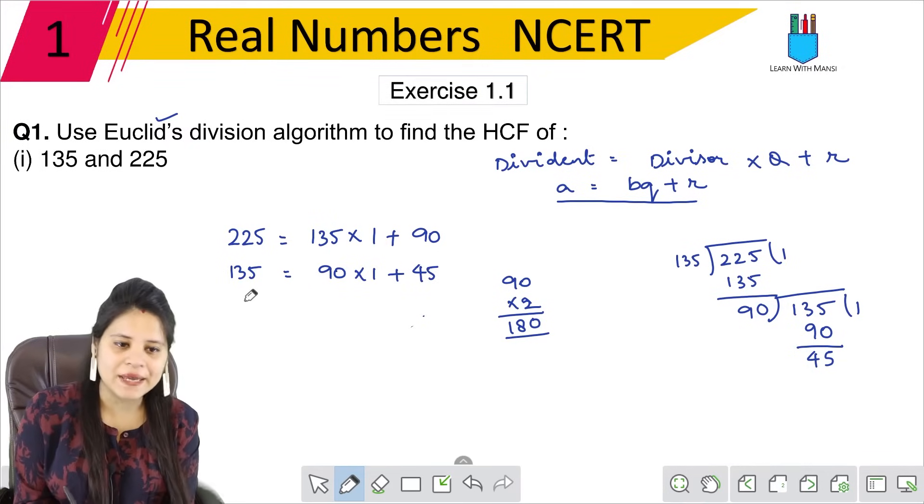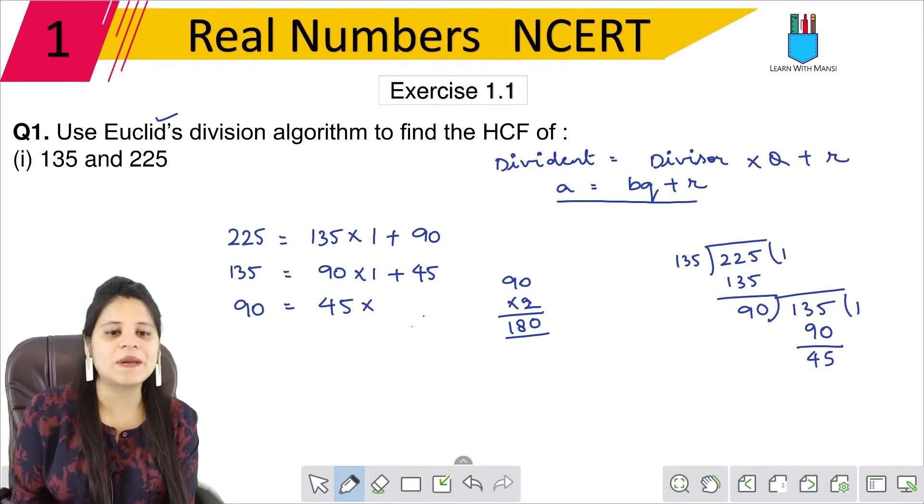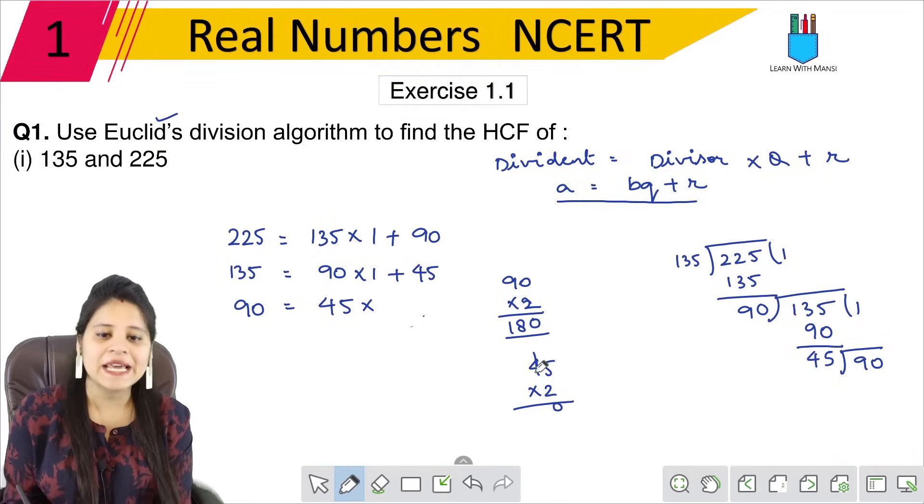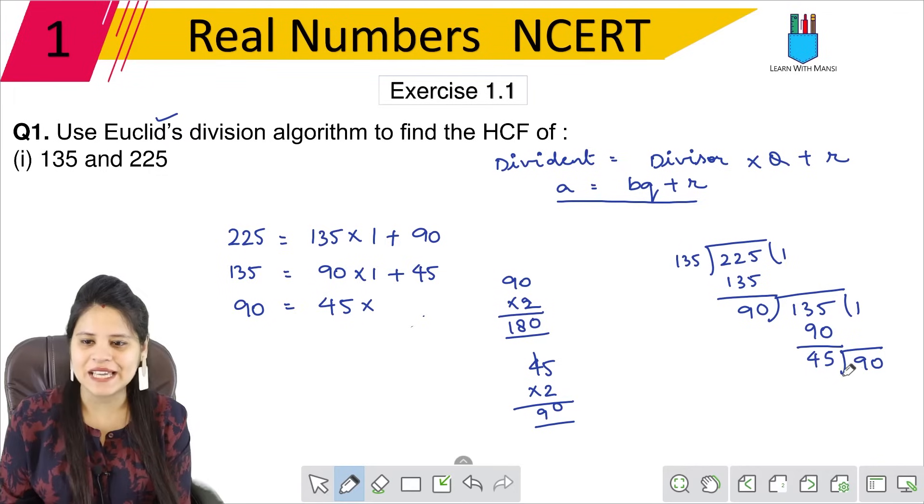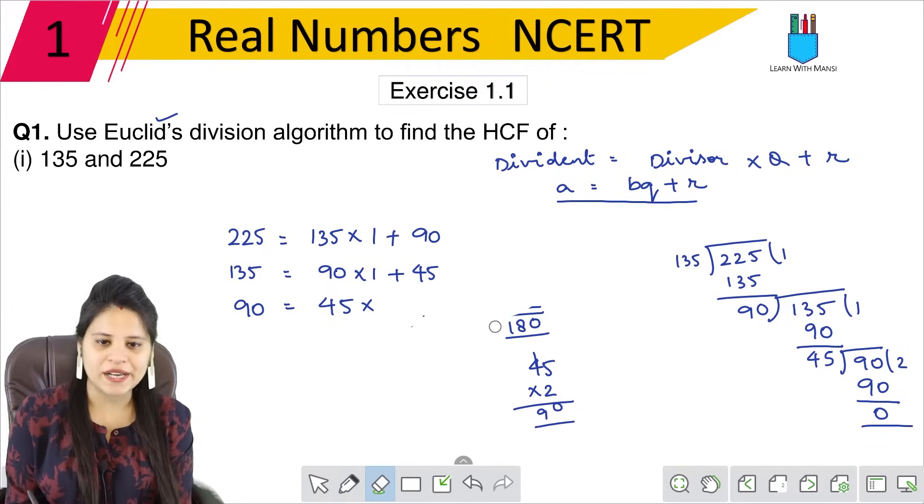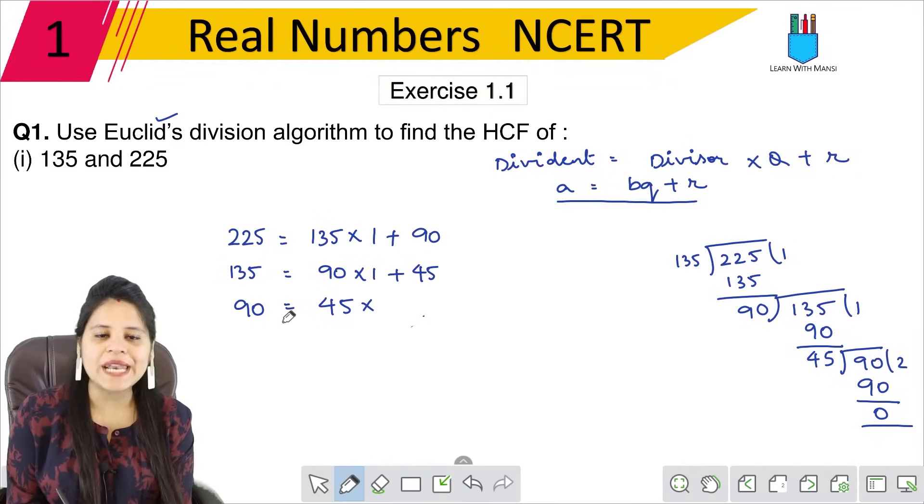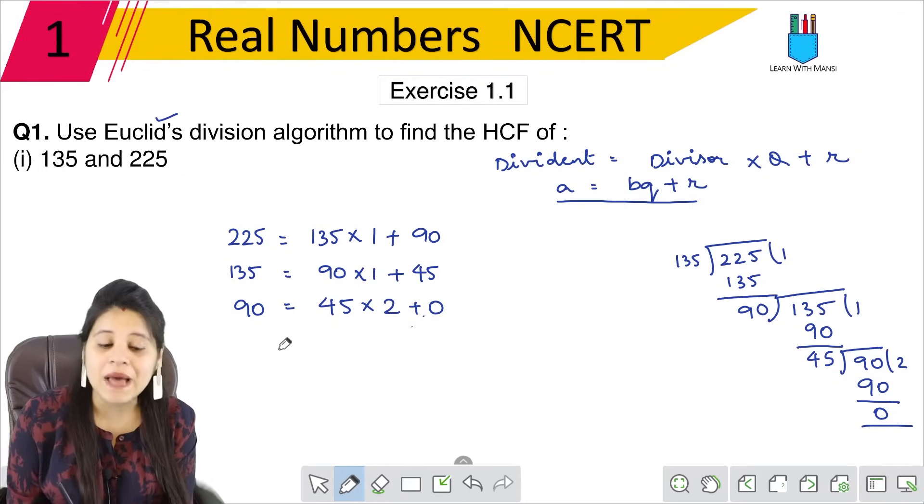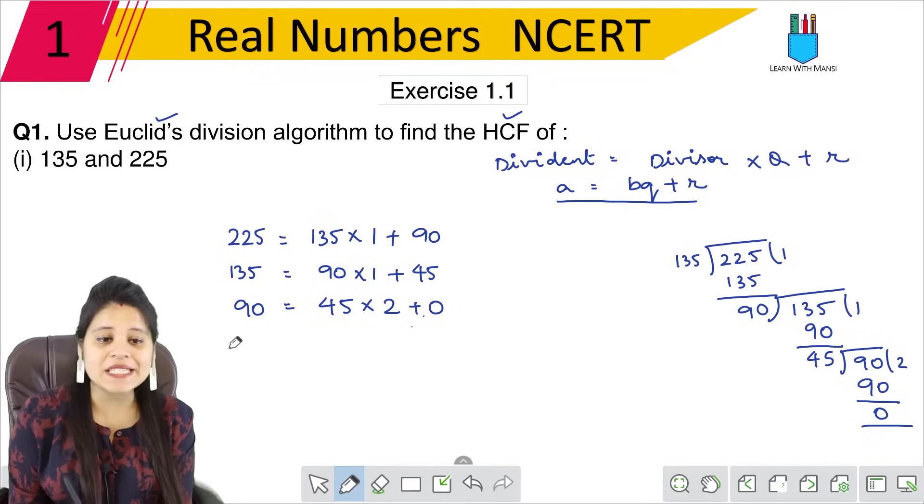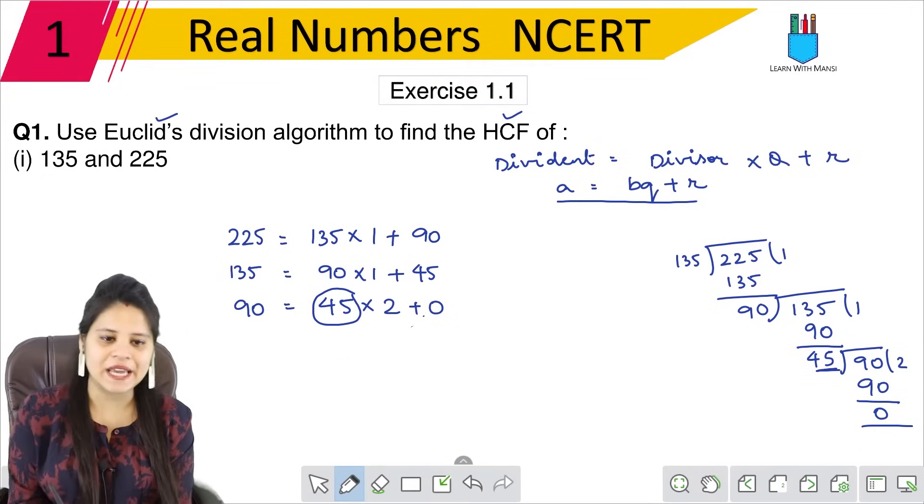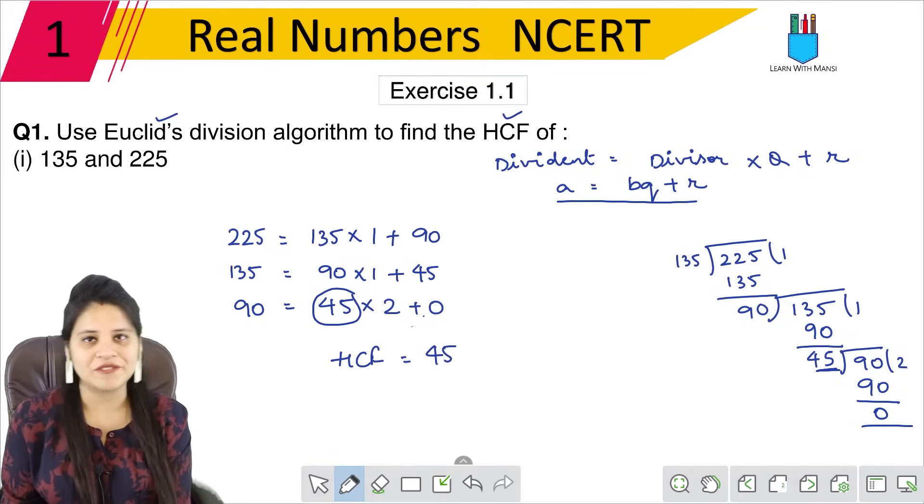Next step, 90 will be divided by 45. It's simple - 45 into 2 equals 90, so remainder is 0. We write 90 equals to 45 multiplied by 2 plus 0. Now remainder is 0, so we stop. The HCF will be the last divisor, which is 45. Therefore, HCF is 45.